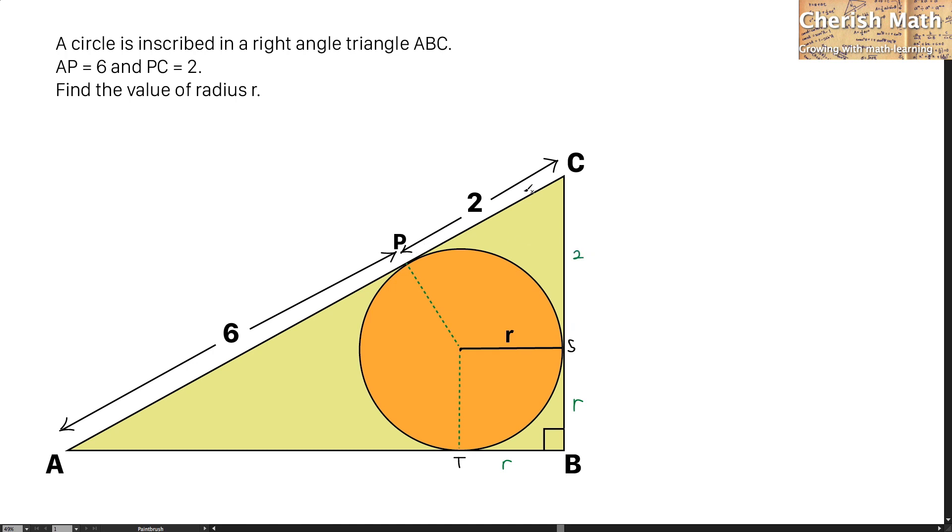Because the lines PC and SC are tangent to the circle at points P and S. For the same method, I'm going to apply for line AP, which is 6 units, on line AT. Then I'm going to put 6 units as well, simply because AP and AT are lines tangent to the circle at points P and T.